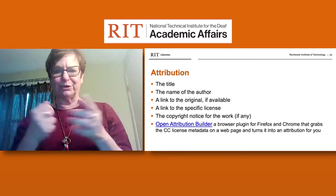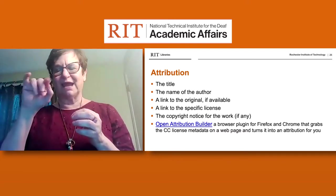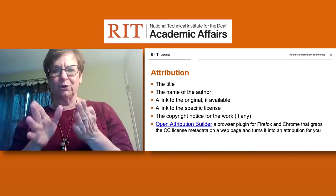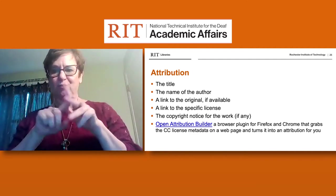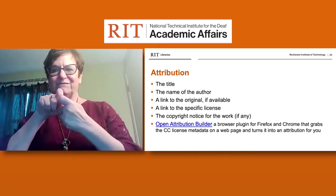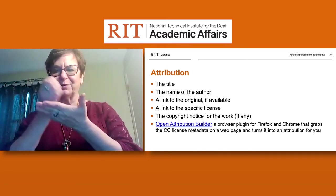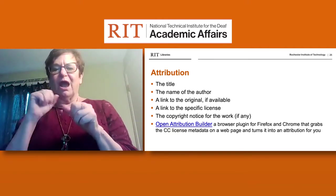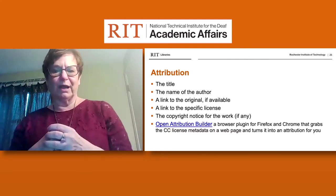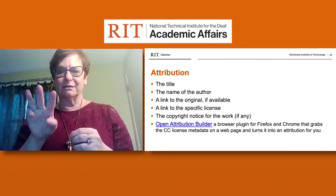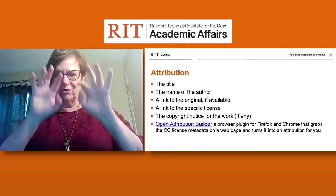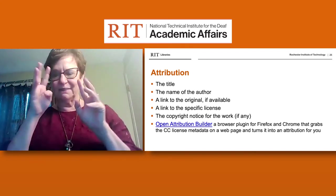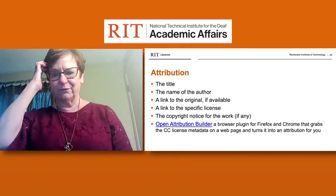What's involved in attribution? It's quite similar to citations. You need to include the title, the name of the author, a link to the original if available, a link to the specific license, and the copyright notice for any work if it exists. The open attribution builder link will give you examples and create the attribution for you with all the necessary components.